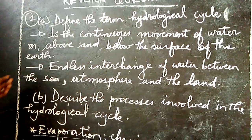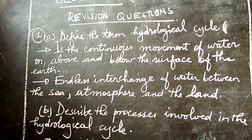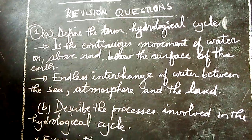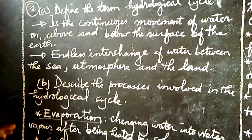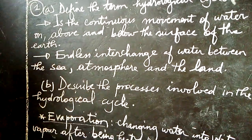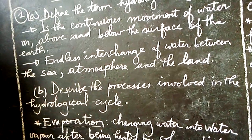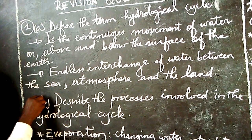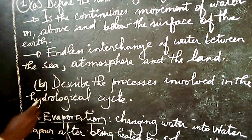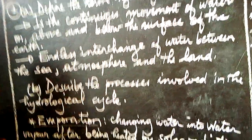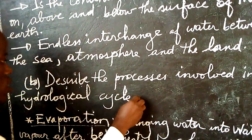When we talk of this hydrological cycle of water, it is very easy to understand. You will understand it better when discussing the different processes relating to the hydrological cycle. Let's go to question one, part B: Describe the processes involved in the hydrological cycle.